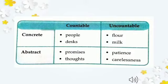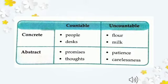Now in this chart, it is being explained that both concrete and abstract nouns can be countable or uncountable. A concrete noun is one we can see and touch. For example: coins — we can count them and touch them, so they are concrete and countable. Flour (آٹا) — we can see and touch it, but cannot count it — so it is concrete uncountable. Similarly, milk is concrete uncountable.